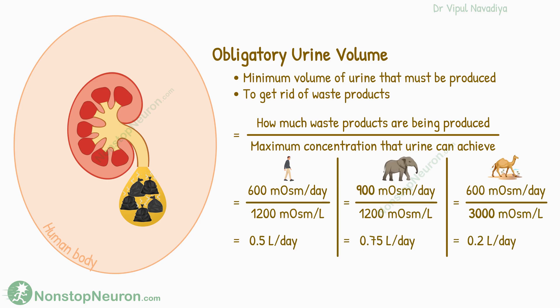If any of these parameters changes, this volume changes. For example, if some animal produces 900 milliosmoles of waste products in a day, that animal needs to produce at least 0.75 liters of urine every day. On the other hand, a desert animal that can concentrate urine up to 3000 milliosmoles per liter can pack 600 milliosmoles of solutes in just 0.2 liters — so this would be its obligatory urine volume.